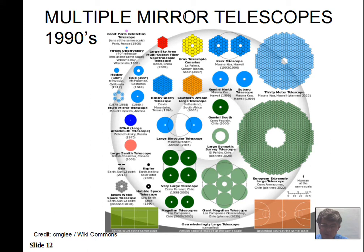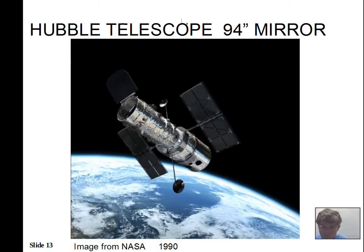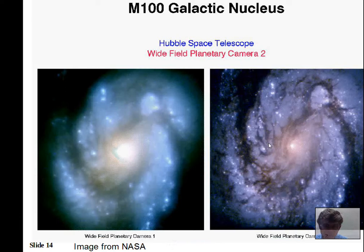The Hubble Telescope has a 94-inch diameter main mirror and is a reflecting telescope put into orbit around 1990, but it had a problem. The first image was a great disappointment because the mirror's focal length was incorrectly made — the curvature was off by roughly the width of a human hair, but that was enough to produce a fuzzy image instead of the sharp image expected.